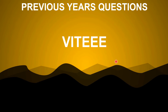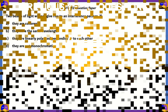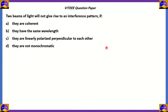Are you ready? Let's start off with our first question, which is from Physics. Two beams of light will not give rise to an interference pattern if: a) they are coherent, b) they have the same wavelength, c) they are linearly polarized perpendicular to each other, or d) they are not monochromatic.